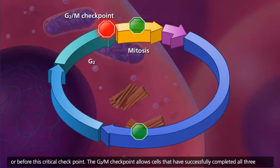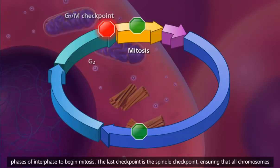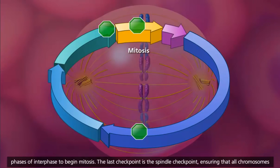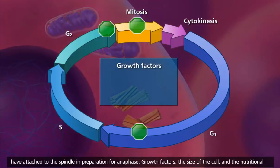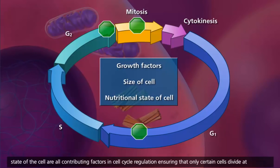The G2M checkpoint allows cells that have successfully completed all three phases of interphase to begin mitosis. The last checkpoint is the spindle checkpoint, ensuring that all chromosomes have attached to the spindle in preparation for anaphase. Growth factors, the size of the cell, and the nutritional state of the cell are all contributing factors in cell cycle regulation, ensuring that only certain cells divide at appropriate times.